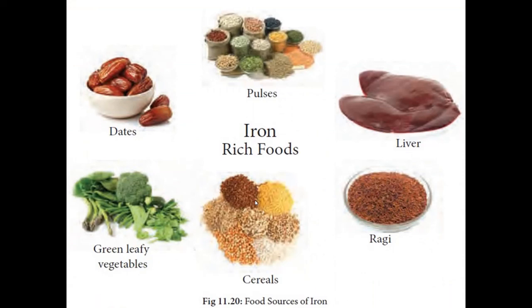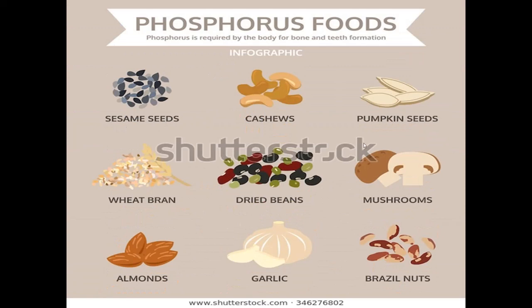Food sources that are rich in iron: pulses, liver, ragi, cereals, green leafy vegetables, dates are some of the food items rich in iron content. Phosphorus: sesame seeds, cashew, pumpkin seeds, wheat bran, dried beans, mushrooms, almonds, garlic and brazil nuts are some of the food items rich in phosphorus.